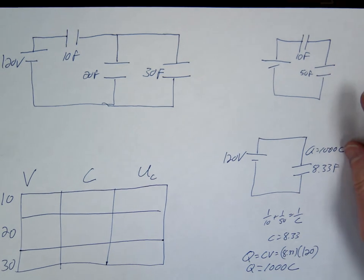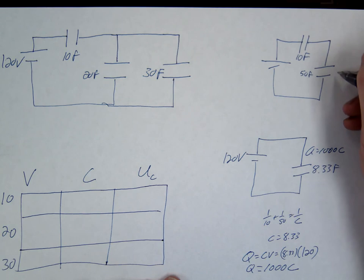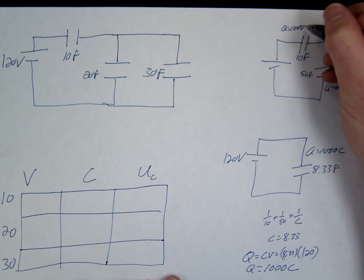We're going to go place that known information back onto this circuit. So remember with series, the key concept is they get one and only one charge. They both have the same charge. So this is going to have a Q of 1000, this is going to have a Q of 1000 also.